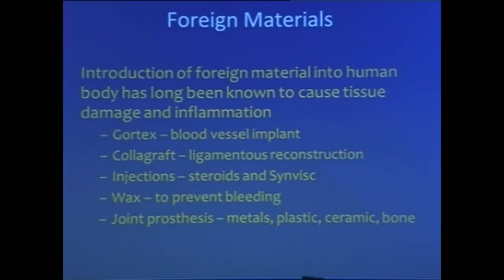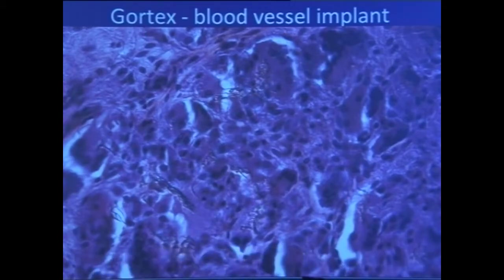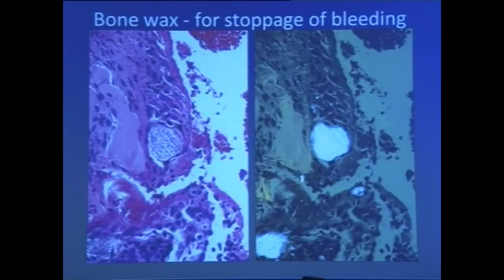Foreign materials have been introduced by orthopedic surgeons for a long time in the human body for damage from inflammation. Here is Gore-Tex — you can see these thread-like spaces lined by foreign body giant cells. The body is reacting against this foreign material. Collagen ligamentous reconstruction looks like eosinophilic, acellular material with a lot of foreign body giant cell reaction. Bone wax for stoppage of bleeding — here is a regular hematoxylin-eosin slide showing this amorphous acellular material; when you polarize it, this is what bone wax looks like.